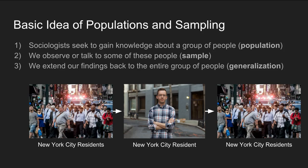One example of populations and sampling is if a researcher was interested in studying people from New York City. New York City residents would represent the population, and the researcher might speak to one or more residents. Based on findings from those interviews, the researcher would make generalizations about New York City residents based on that sample and extend those findings back to the entire group.